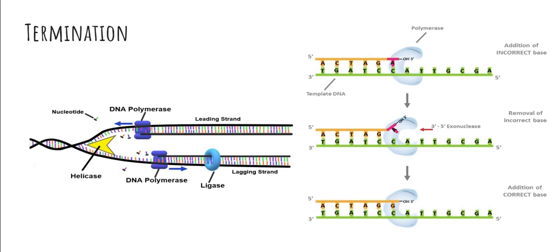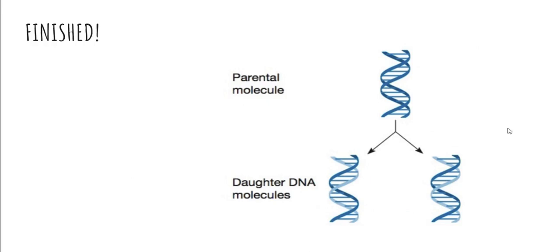Finally, the exonuclease does one more job: it looks for errors inside the newly formed DNA strands and corrects them, as seen on the right. The two new DNA strands then wind up into the helix shape, producing two identical DNA molecules.